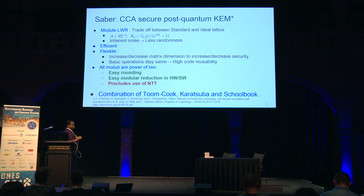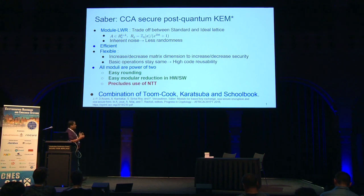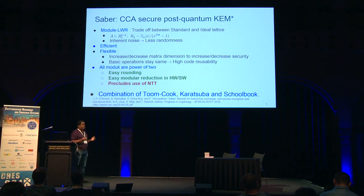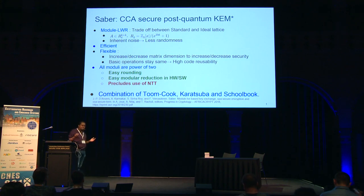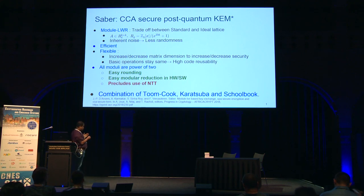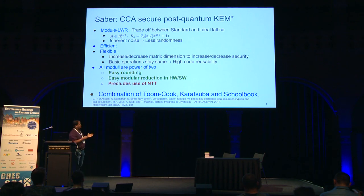Of course, we cannot use NTT because NTT requires a specific structure of the primes. As you may know, in most lattice-based protocols, polynomial multiplication is the most computationally intensive part. NTT is the best polynomial multiplication, and we cannot use it. This might make you think Saber suffers in performance, but if we use a combination of Toom-Cook, Karatsuba, and Schoolbook, and since our polynomials are small — only size 256 — we will show that we don't suffer much in efficiency or speed.